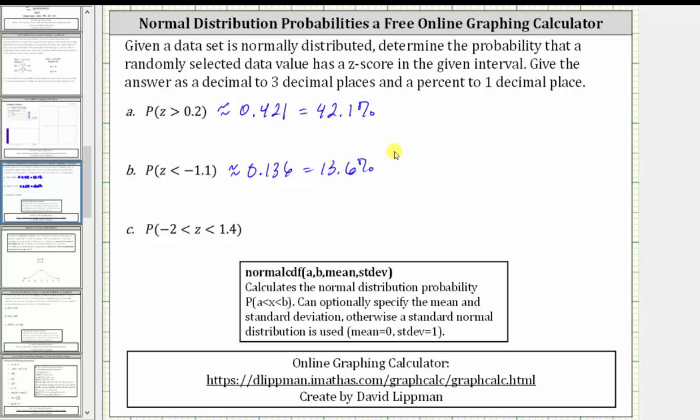For part C, we want to find the probability the z-score is greater than negative 2 and less than 1.4. So now A is going to be negative 2 and B is 1.4.